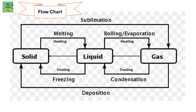Here is the flow chart. Solid turns into liquid by melting, which is a heating process. Liquid changes into gas by boiling or evaporation, which is also heating. However, gas changes into liquid, which is condensation — that's cooling — and liquid changes into solid by freezing, which also comes under cooling.